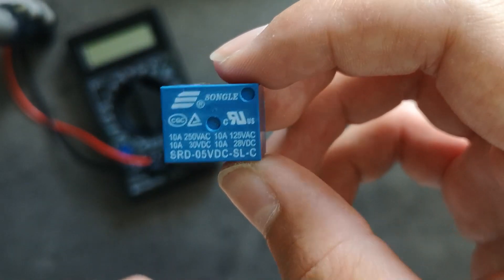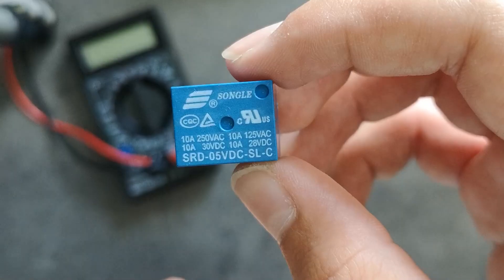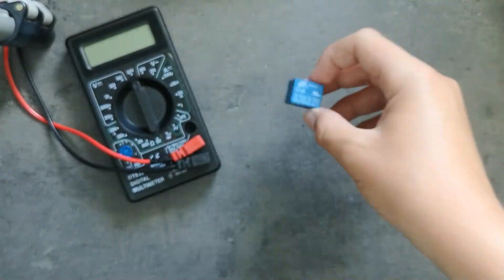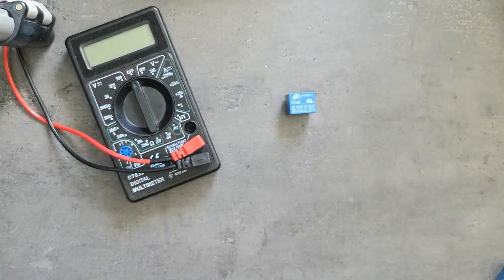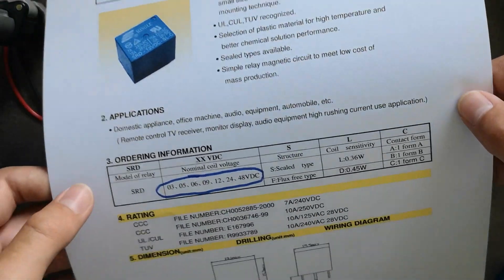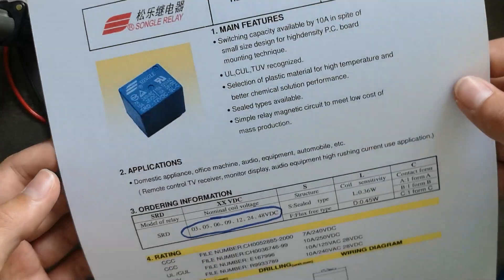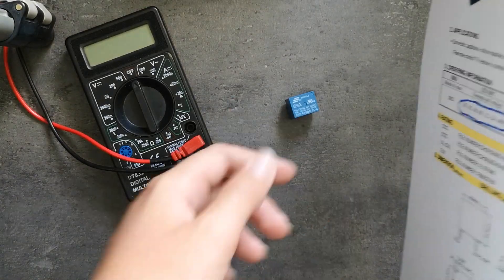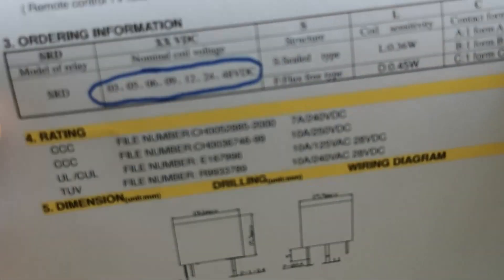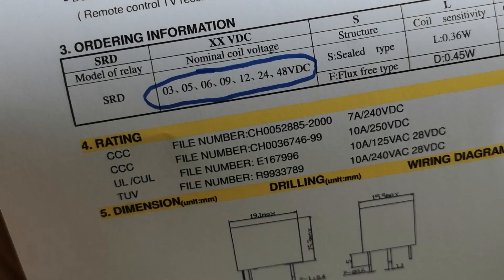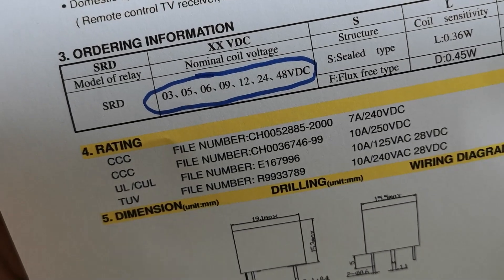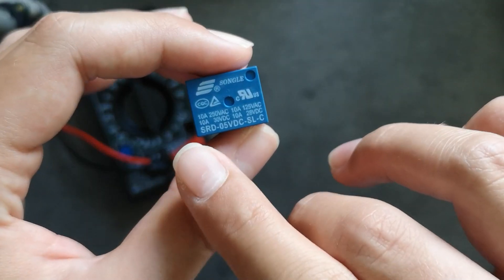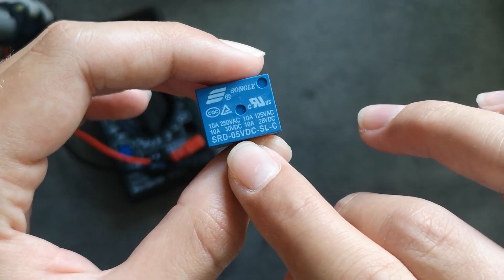First I've got here a SONGL SRD 05V DCSLC relay and I've got the datasheet for that relay right here. You can find those on Google if you just type the serial number or the part number. Here we have the nominal coil voltage and for mine it's 5 volts because in the name you can see 5 volts DC.